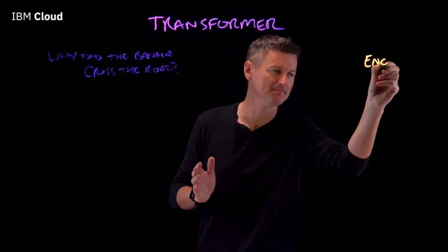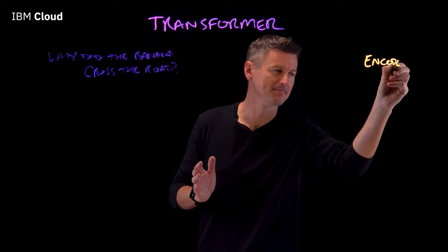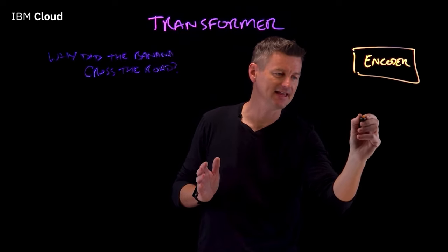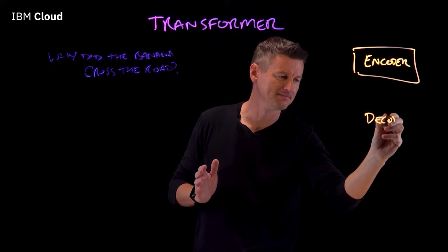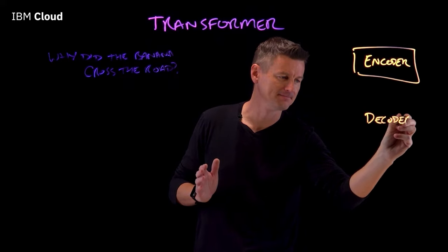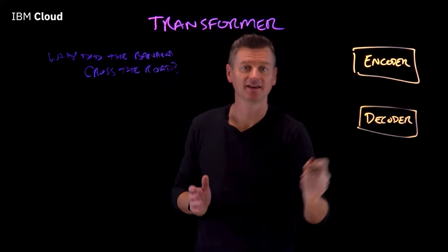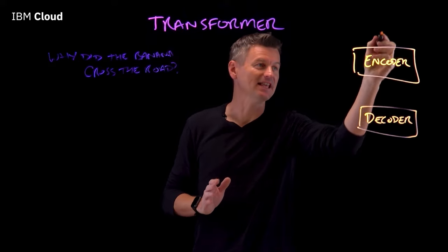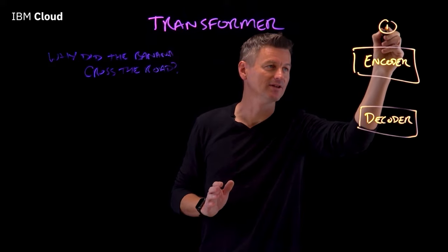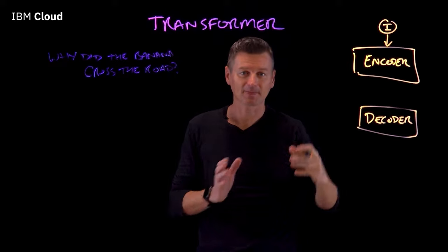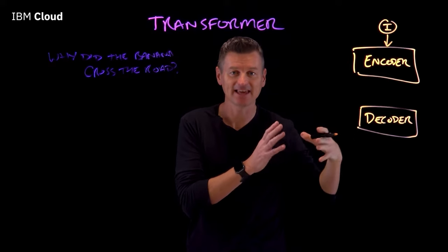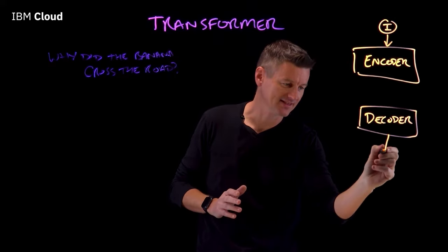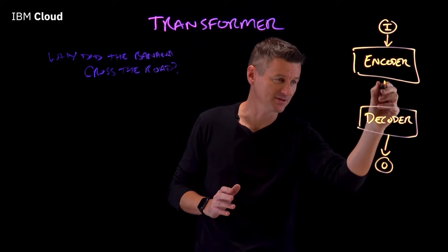Transformers consist of two parts: there is an encoder and there is a decoder. The encoder works on the input sequence, and the decoder operates on the target output sequence.